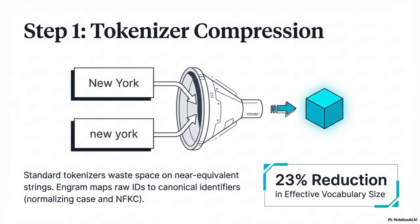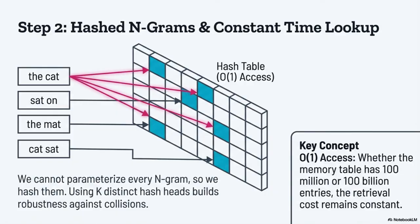It's asking: given what I'm currently processing, how much confidence should I have in this retrieved memory? If the retrieved pattern completely contradicts the current context, the gate slams shut — it falls towards zero and the memory input gets suppressed. It ensures memory is only injected when it actually aligns with the backbone's ongoing work. It's cheap conditional recall.